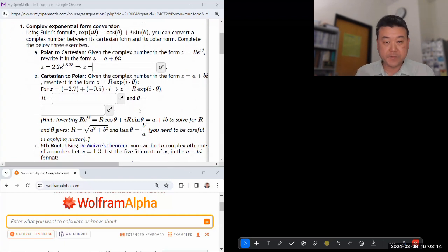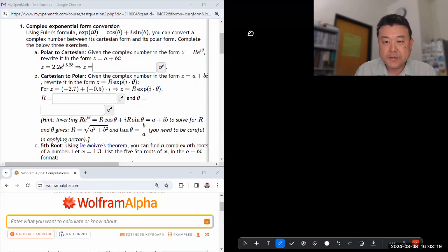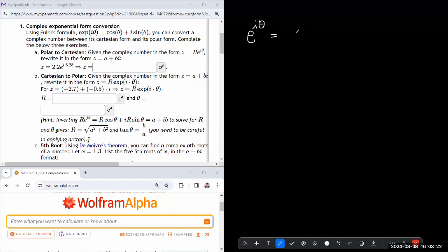Complex exponential form conversion. Let me write down Euler's formula - we're going to be using it a lot. E to the i theta, that's a complex exponential, equals cosine of the angle plus i sine theta. This is basically your formula for converting from polar form with unit length of one to Cartesian form with real and imaginary components.